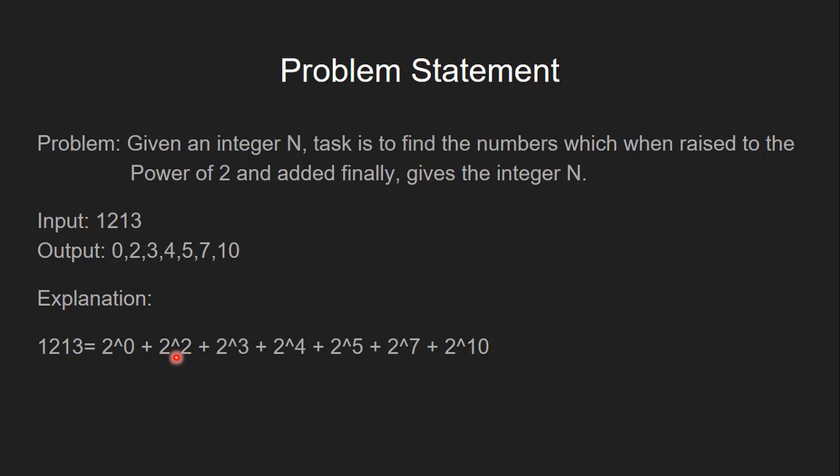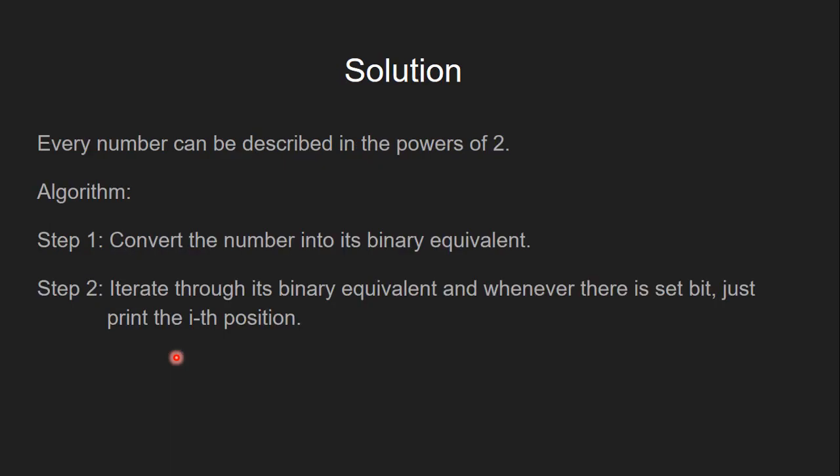Let's see how to solve this problem. The key idea here is that every number can be described in the powers of 2. So in the first step, we convert the number into its binary equivalent. And in the second step, iterate through its binary equivalent and whenever there is a set bit, just print the ith position.